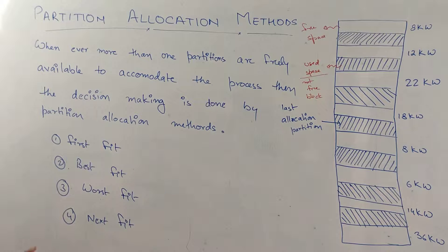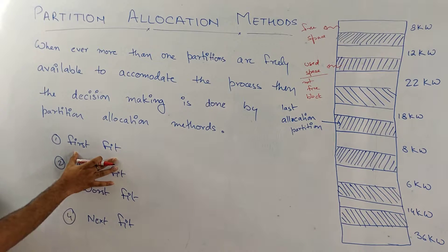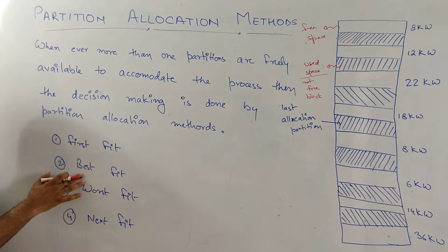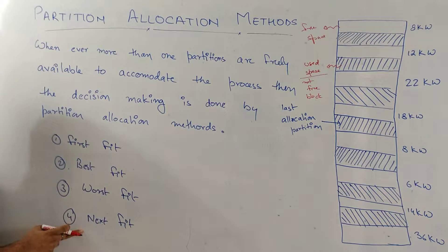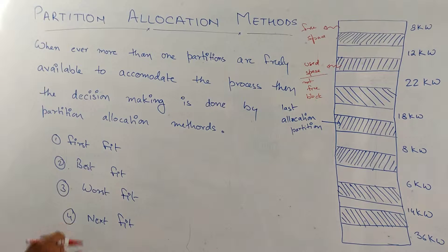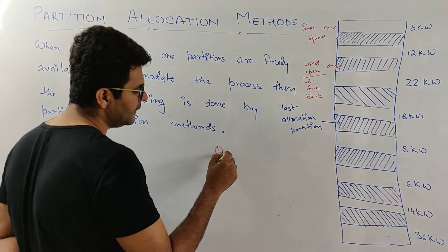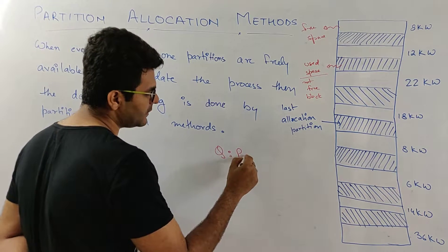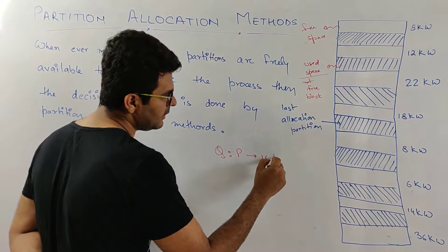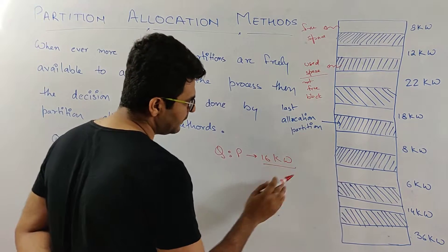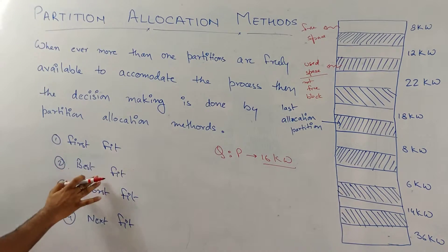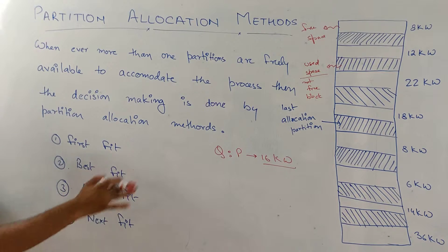There are four different strategies: first is first fit, second is best fit, third is worst fit, and fourth is next fit. In every strategy, we will allocate the process into memory. For example, if I have a process which is 16k words in size, I will allocate it using each technique.